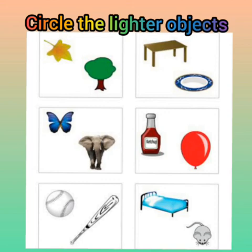In the next picture you will see two pictures: one is a ball and one is a bat. The ball is lighter and the bat is heavy, so you will circle on the ball. In the next picture you will see a rat and a bat. The bat is heavy and the mouse is lighter, so you will circle on the mouse.